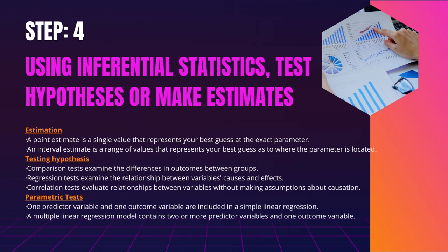Typically, comparison tests compare the means of groups. These can be the means of different groups within a sample, for example, a treatment and control group; the means of one sample group taken at different times, for example, pre-test and post-test scores; or a sample mean and a population mean. When the sample size is small (30 or less), a t-test is used for exactly one or two groups. When the sample size is large, a z-test is used for exactly one or two groups. An ANOVA is used when there are three or more groups.